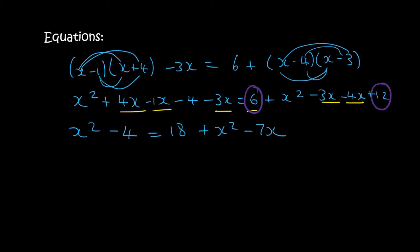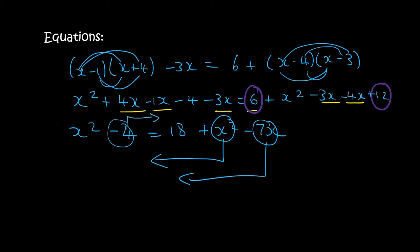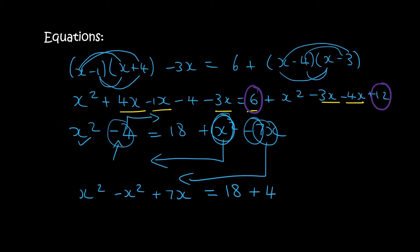Now take all x's to the left and all numbers to the right. We already have x squared on the left. The other x squared comes over and becomes negative, and minus 7x comes over and becomes plus 7x. On the right we have 18, and minus 4 becomes plus 4. The x squares cancel, leaving 7x equals 22, so x equals 22 over 7.